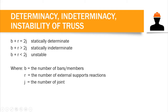Now let me discuss how to determine if our truss system is statically determinate, statically indeterminate, or unstable. We have this formula: B plus R is equal to 2J, where B is the number of bars or members, R is the number of external support reactions, and J is the number of joints. If B plus R equals 2J, the truss is statically determinate. If B plus R is greater than 2J, the truss is statically indeterminate. If B plus R is less than 2J, the truss is unstable.